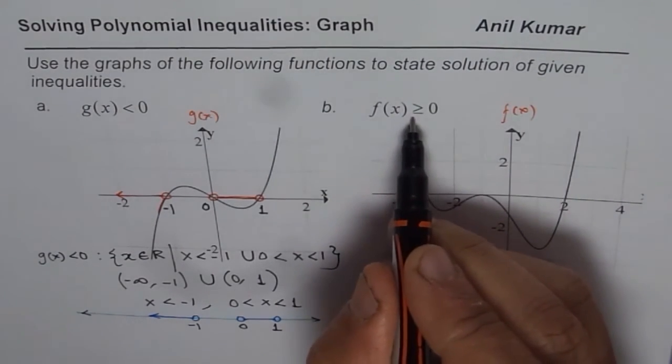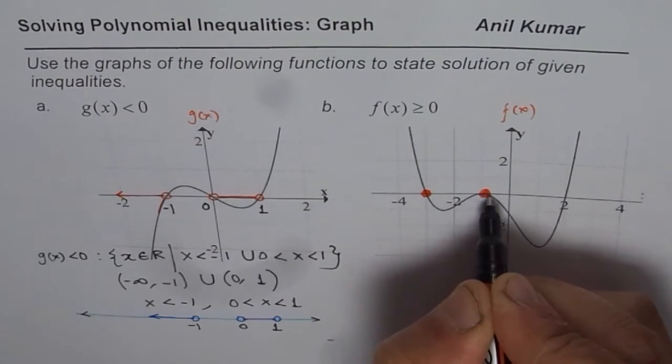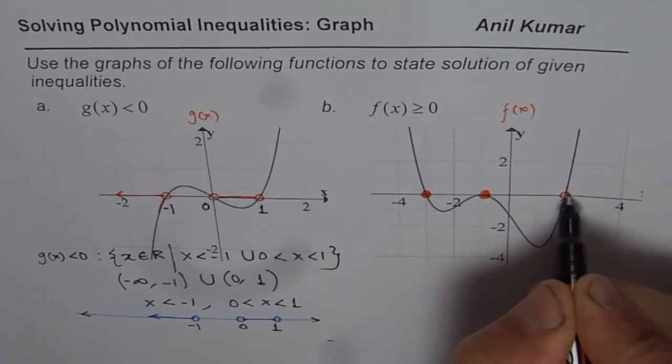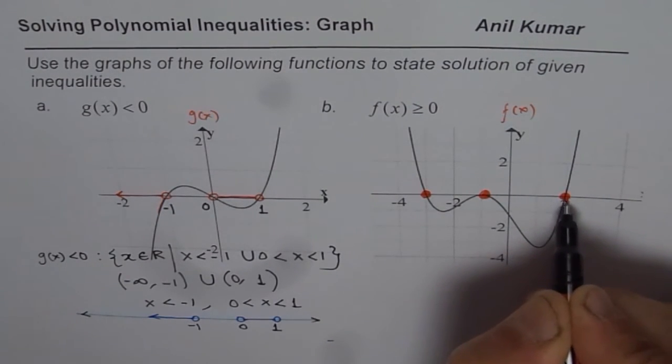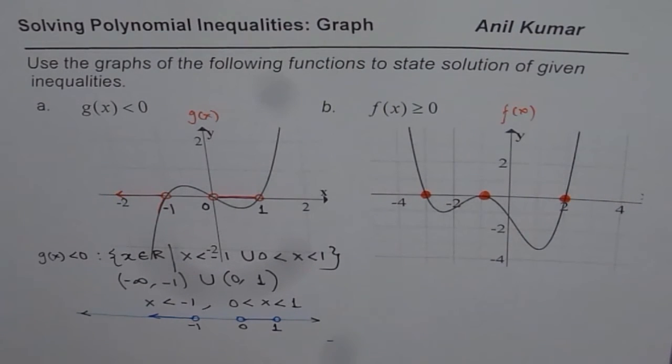When we say greater than equal to, then these zeros, the x-intercepts, are part of the solution. So I am drawing them as filled in holes. Do you see that? So if you do like that, you will never make a mistake. Otherwise, you might just skip, especially this point.